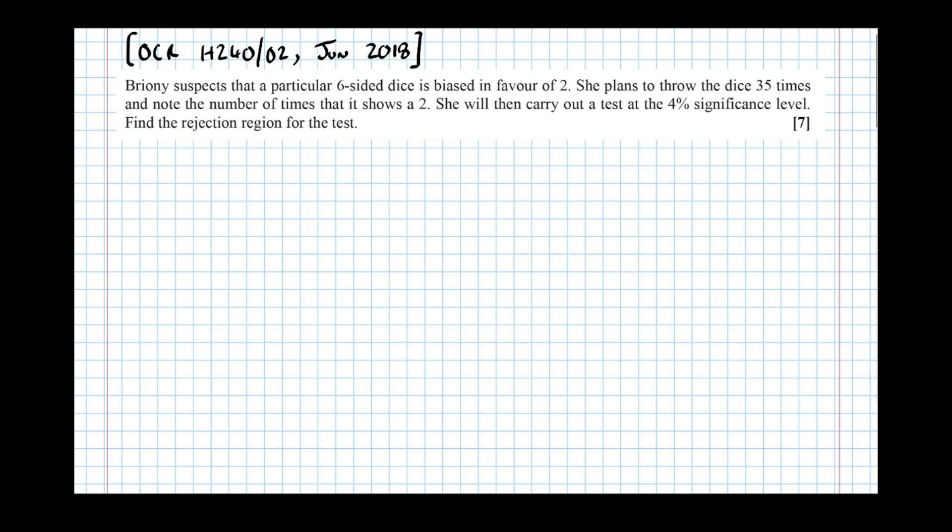We're now going to put into practice all that we've learned about finding the critical region of a binomial hypothesis test with an exam question. Bryony suspects that a particular six-sided dice is biased in favor of two. She plans to throw the dice 35 times and note the number of times that it shows a two. She will then carry out a test at the 4% significance level. Find the rejection region for the test.